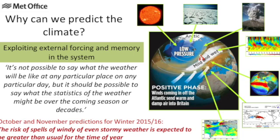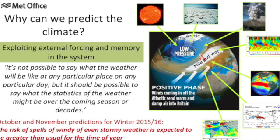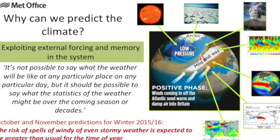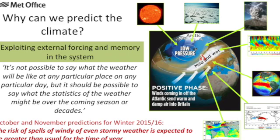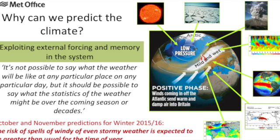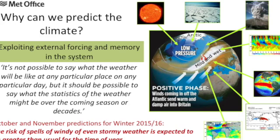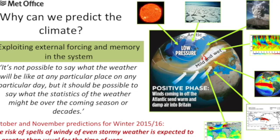That is incredibly valuable information if you're a contingency planner or thinking about long-term infrastructure. This example emphasizes the massive progress made in the last decade in seasonal forecasting, particularly for northwest Europe and the UK and Ireland, in something called the North Atlantic Oscillation, which decides whether our winter will be mild and wet or cold and dry.